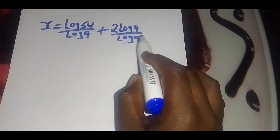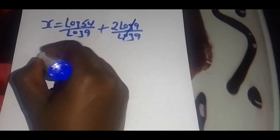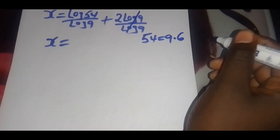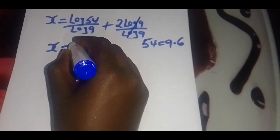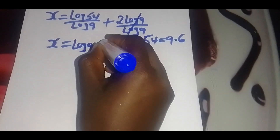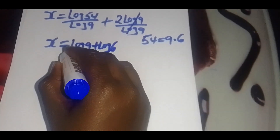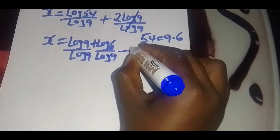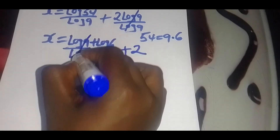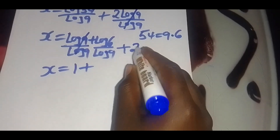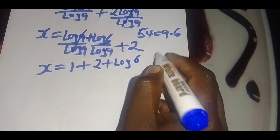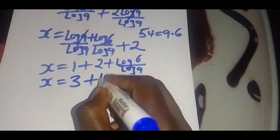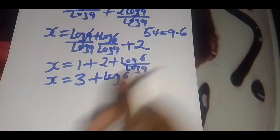This simplifies. Log 54 can be expressed as log of 9 times 6. So we're going to have log 9 plus log 6, all divided by log 9, plus 2. Simplifying, the value of x will be equal to 1 plus 2 plus log 6 divided by log 9, so that x equals 3 plus log 6 to base 9.